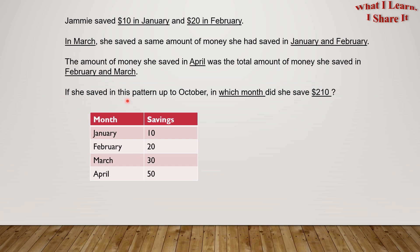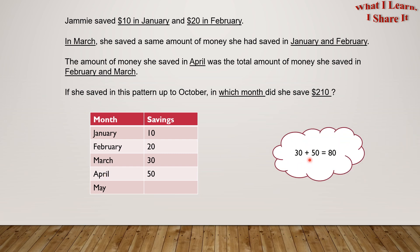If she saved in this pattern up to October, which month did she save $210? Do you see the pattern here? To find the savings of any month, we have to add the savings of the previous two months. So for the month of May, what will be the savings? Yes, it will be the sum of the savings of March and April, which is $30 plus $50 equals $80. So the savings of May will be $80.